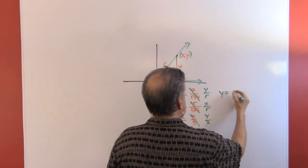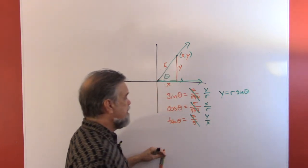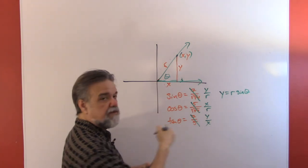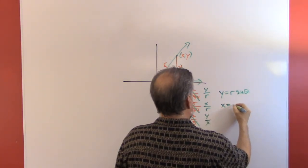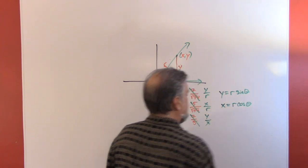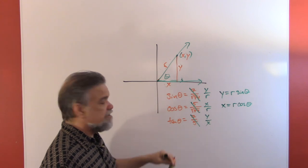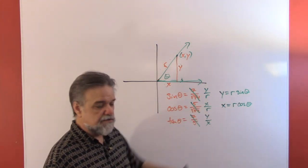If the sine of theta is y over r, if I multiply both sides by r, I would get that y is r times the sine of theta. If the cosine of theta is x over r, that means I can multiply both sides by r and get x is r times the cosine of theta. The tangent, we'll use that later, but for right now I want to focus on those two.